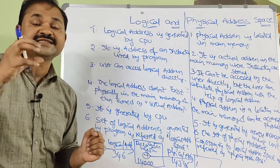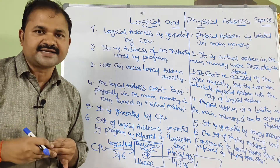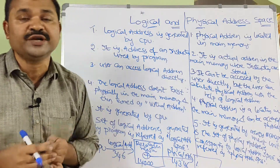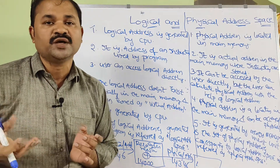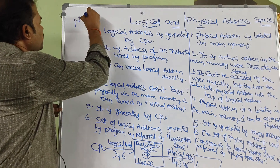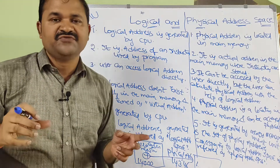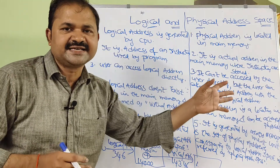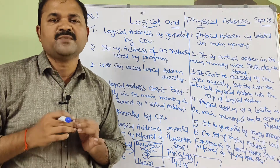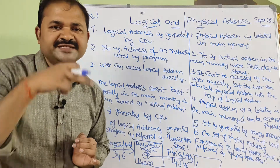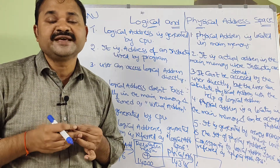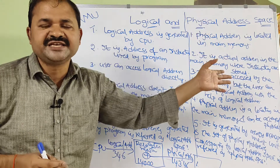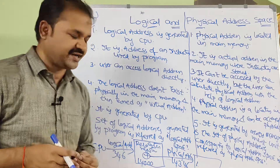Logical address is generated by the CPU. If the CPU generates an address, that address is called a logical address. Whereas physical address is generated by the memory management unit, or MMU. MMU is a hardware which performs the mapping between logical address and physical address. The memory management unit is hardware present in the CPU that performs the mapping from logical address to physical address.